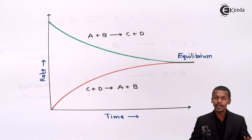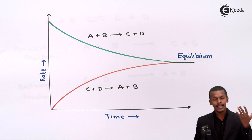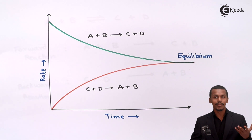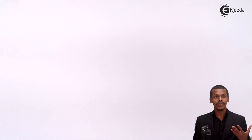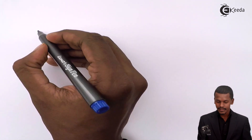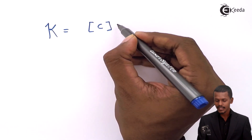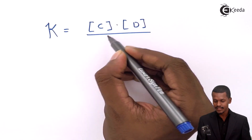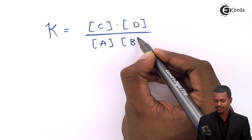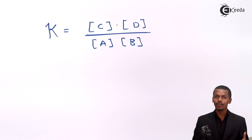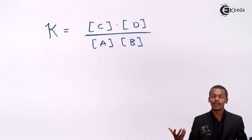The mixture obtained at that point is known as the equilibrium mixture. The concentrations — or active masses — of both reactant and product are constant values. For the reaction A + B ⇌ C + D at chemical equilibrium, the ratio of the concentration of the products to the concentration of the reactants is a constant value, denoted as K. This is written as K = [C][D] / [A][B], and this constant value is known as the equilibrium constant.